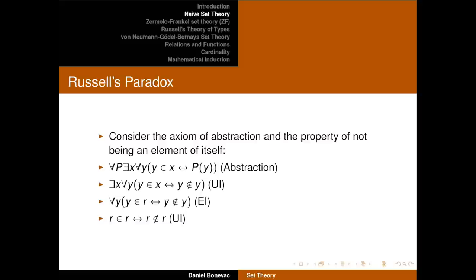Let's instantiate and call that x 'R'. Then we have: for any y, y belongs to R if and only if y does not belong to y. But that's true for all y, so we can substitute R for y, and we get that R belongs to R if and only if R does not belong to R. That's disturbing. Assume that R does belong to itself — then it doesn't. But if it doesn't, then it does. So we get a contradiction.